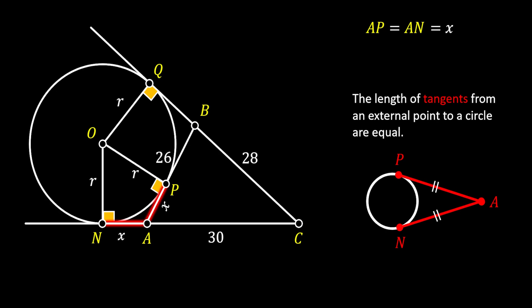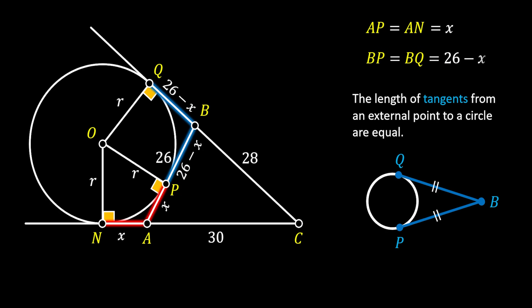Next, let's have a look at line PB. The length of this line will represent the difference between lines AB and AP, so in our case this is 26 minus X. Then, looking at line BQ, since B is the external point to these two tangent lines, lines BP and BQ also have the same length. So BQ must be equal to 26 minus X as well.